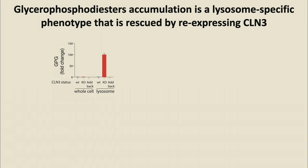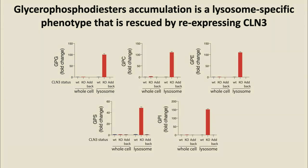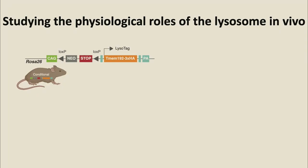Looking at this graph, you can see that at the whole-cell level in the knockout, you barely see any difference for these GPDs — probably why people missed this over the years despite many studies looking at metabolites in patients and models. But in the lysosome, you see this massive accumulation that you can rescue by a simple add-back of the CLN3 gene. This holds true for all five different types of GPDs. This is an artificial system using HEK293Ts, which have nothing to do with neurons or brain cells.